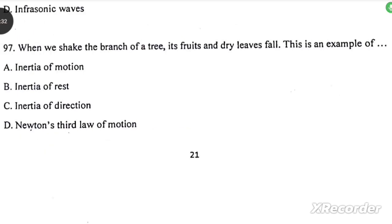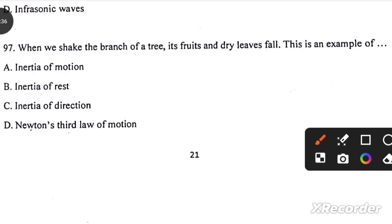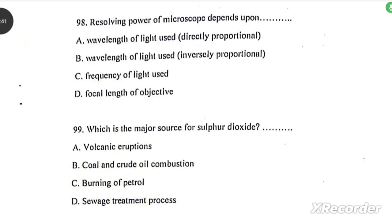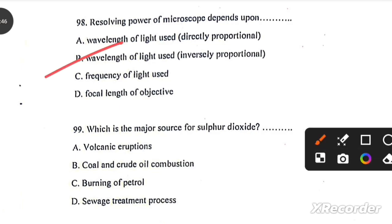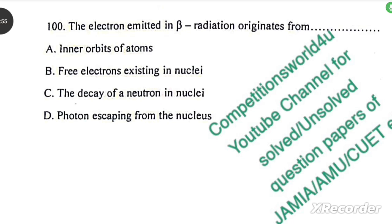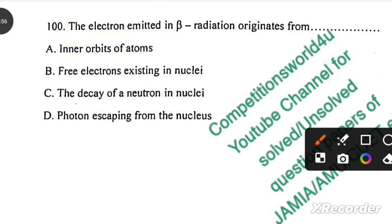When we shake the branch of a tree, its fruits and dry leaves fall. This is an example of inertia of rest. Resolving power of microscope depends upon wavelength of light used. Which of the following is the major source of sulfur dioxide? Coal and crude oil combustion. The electron emitted in beta radiation originates from the decay of neutrons in nuclei.